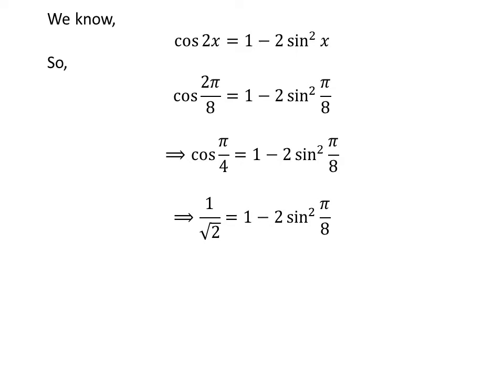We know the value of cosine of pi upon 4 is 1 upon square root of 2. So 1 upon square root of 2 is equal to 1 minus 2 times the square of sine of pi upon 8. Shifting 1 from the right hand side to the left hand side gives us 1 upon square root of 2 minus 1 is equal to minus 2 times the square of sine of pi upon 8.